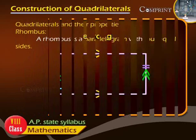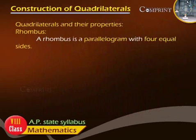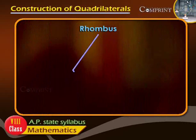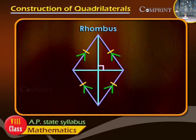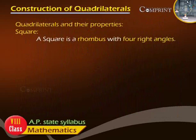A rhombus is a parallelogram with four equal sides. A square is a rhombus with four right angles.